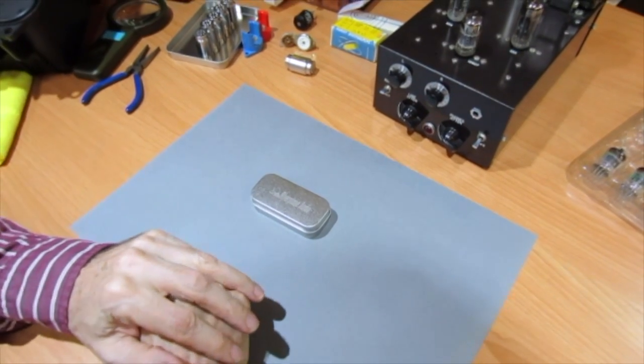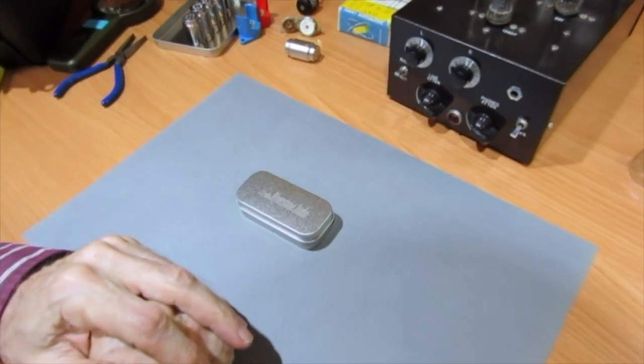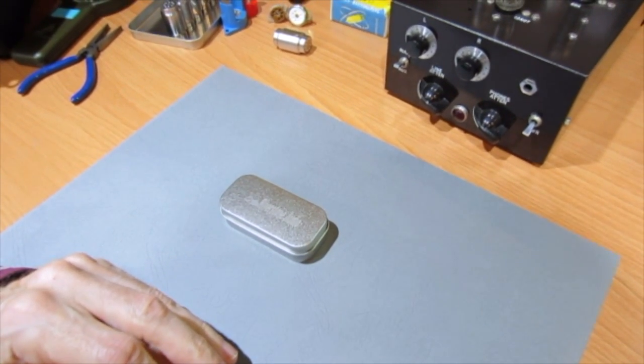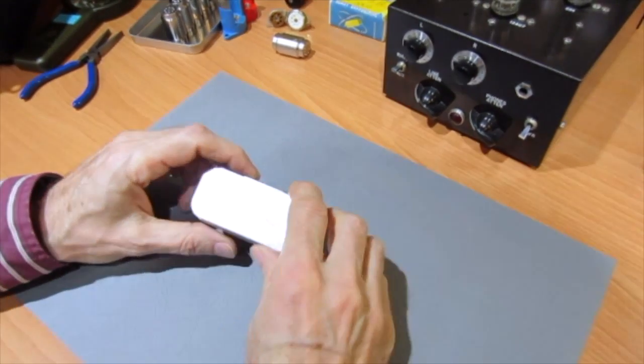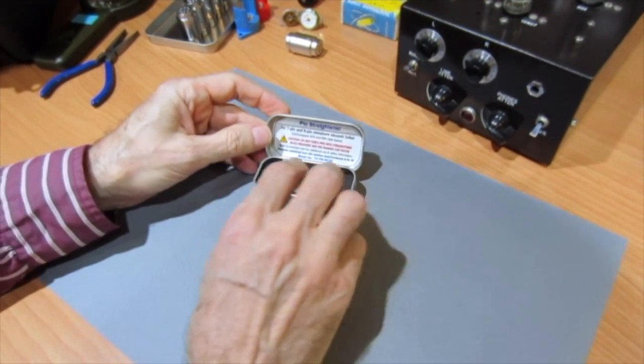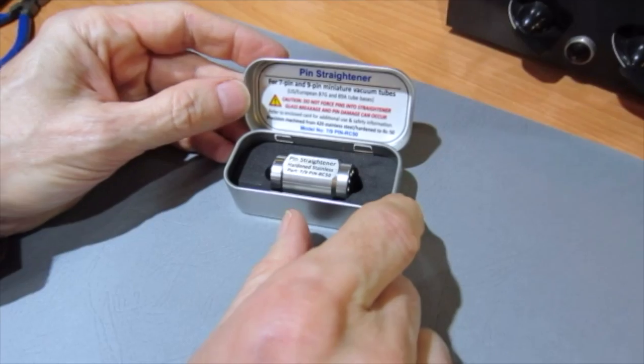Hi, this is John from Riverstone Audio. I'd like to very briefly describe one of our newer products for 2017, which is a vacuum tube pin straightener. It comes in a metal storage box.